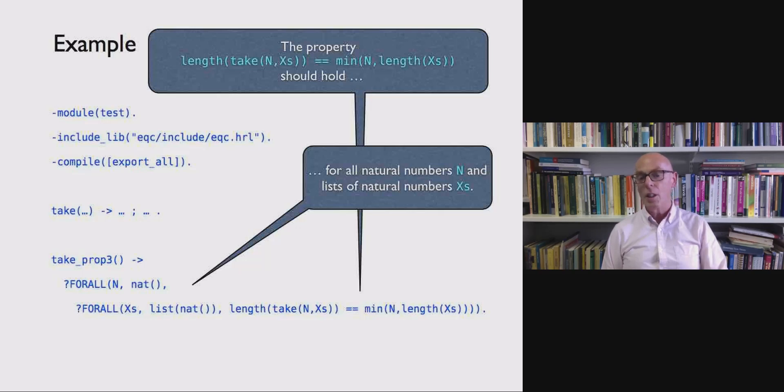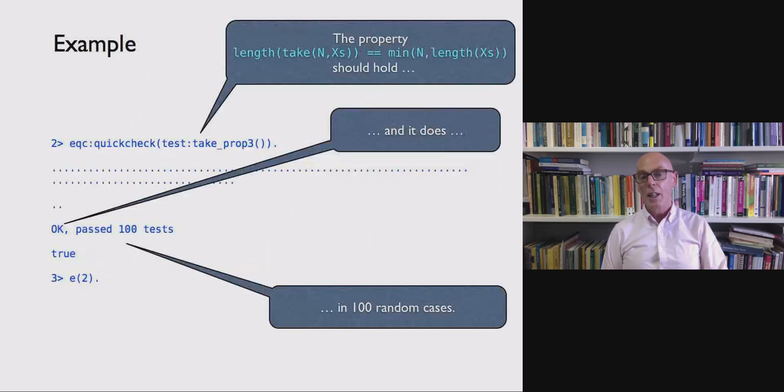We're now saying that for all N and for all lists we expect that to hold. And again we're saying it for all natural numbers. And now if we apply quick check we see that it passes a hundred tests. So that tells us that the property holds at least in a hundred random cases. Now it doesn't tell us it always holds. We might have to do a thousand. But typically a hundred will catch most errors. And you can always run quick check for longer. You can tune it in various ways. But that gives you an idea of the way that property based testing works.